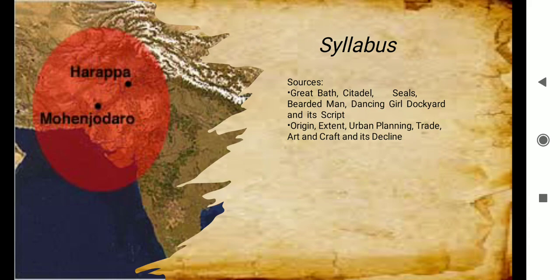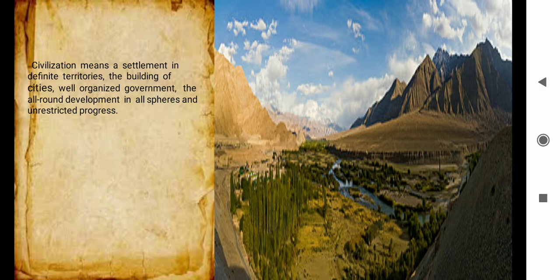In this chapter, the topics that will be explained, covered or tested are sources which include the Great Bath, Citadel, Seals, Statue of Bearded Man, Statue of the Dancing Girl, Dockyard, and their script. Other topics include the origin of this civilization, the extent of this civilization, its urban planning, its trade, its art and craft, and the reasons for its decline.